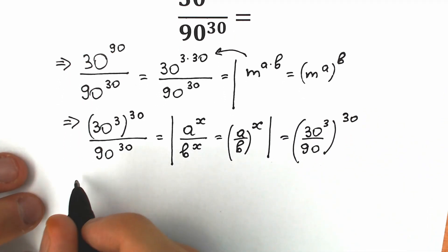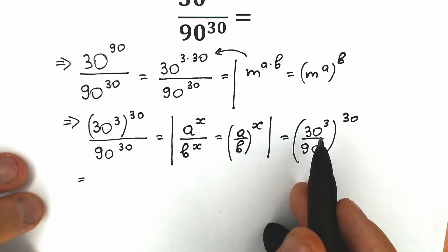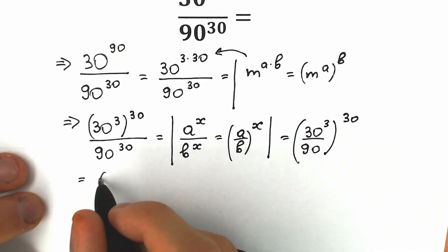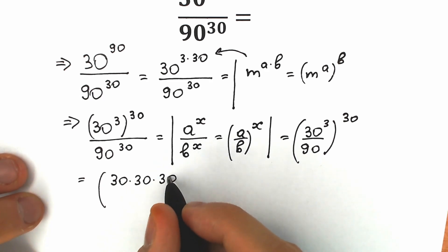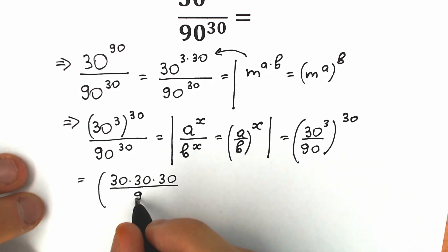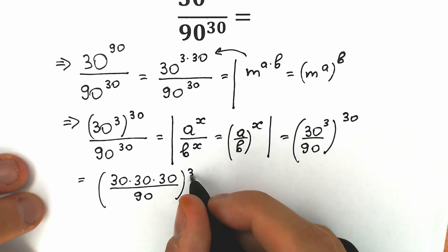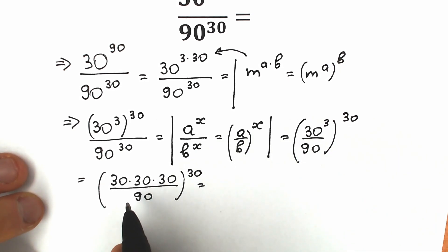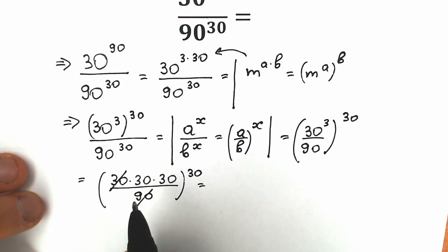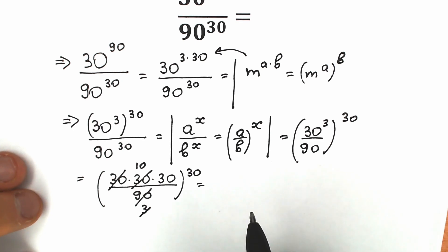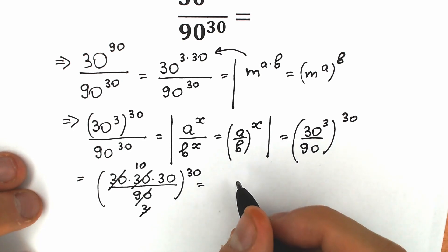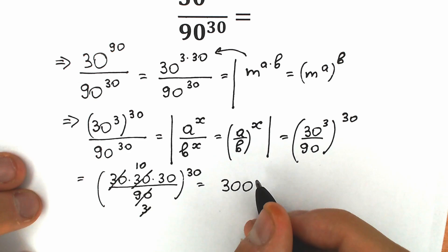Right now let's simplify this a little bit. We can write 30 cubed as 30 times 30 times 30, divided by 90, all raised to the 30th power. We can easily cancel this: divide 90 and 30, canceling by 30 gives us 3, and then canceling that 30 with 3 gives us 10. So 10 times 30 equals 300 — we have 300 to the power 30.